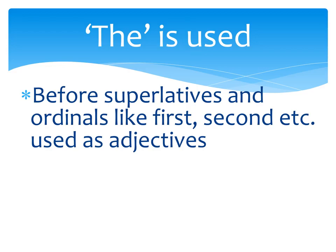Let me tell you, there are two types of numbers — one is cardinal, the other is ordinal. Cardinal numbers are like one, two, three, four, five and so on. Ordinal numbers are like first, second, third. Superlative degrees are like good, better, best — so 'best' is the superlative degree of 'good.' We use 'the' before superlative degrees.